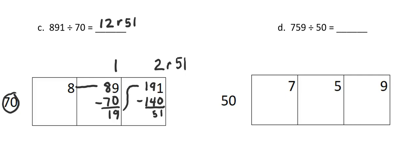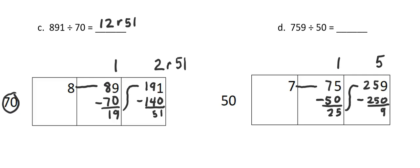Let's do one more problem. Here I have 759 divided by 50. I can't take any groups of 50 out of 7, so I'm going to move that over. How many groups of 50 can I get out of 75? I can get one group of 50 out of 75, so I subtract that, leaving me with 25. I'll move that over — now I have 259. Thinking of multiples of 50, 5 times 50 is 250 because 5 times 5 is 25, and that's my related fact. So I can take 5 groups of 50 out of 259. 5 times 50 is 250, so I subtract and get a remainder of 9. That means 759 divided by 50 equals 15 remainder 9.